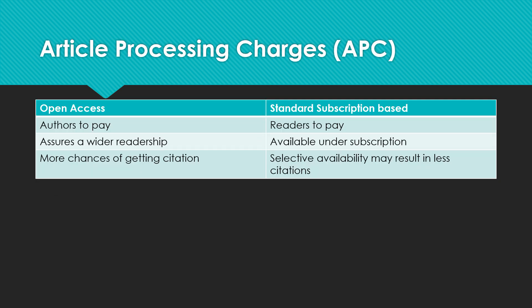There are pros and cons of both types. In open access, there is a greater chance of getting citations, so your research profile will improve, but you have to pay. In the case of standard subscription-based journals, you don't have to pay, but the availability of your article will be limited and it might result in fewer citations. So you have to choose wisely.